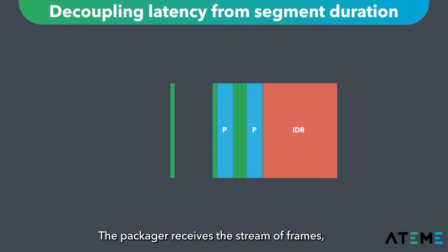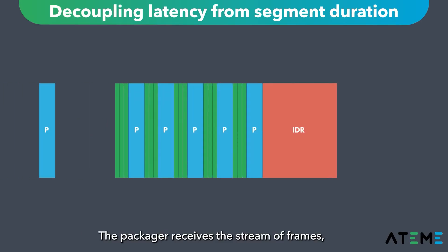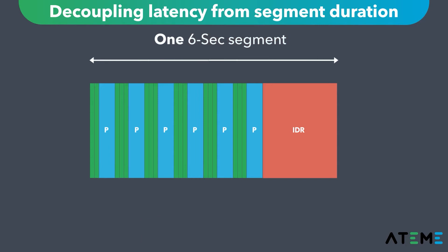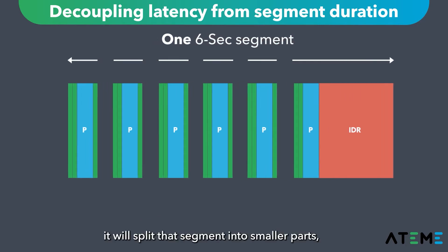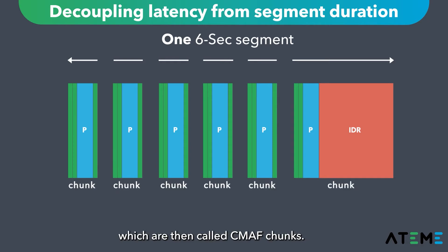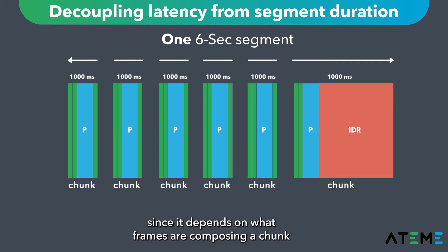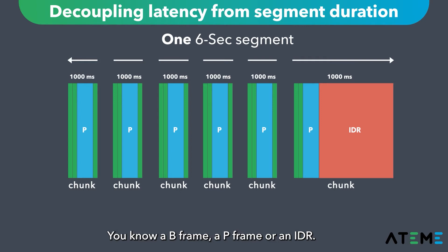The packager receives the stream of frames, and instead of putting them inside a full 6-second segment, it will split that segment into smaller parts, which are then called CMAF chunks. Each of those chunks has the same duration — so 4 frames or 1 second in our example — while having different sizes, since it depends on what frames are composing a chunk: the B-frames, the P-frames, or the IDR.